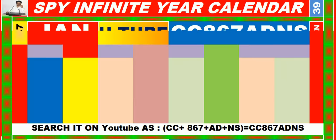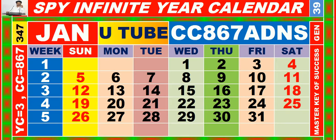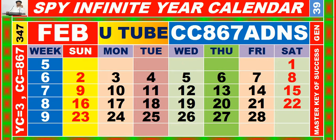Calendar for the month of January, having calendar code equal to 6, 7. Calendar for the month of February, having calendar code equal to 8, 6, 7.